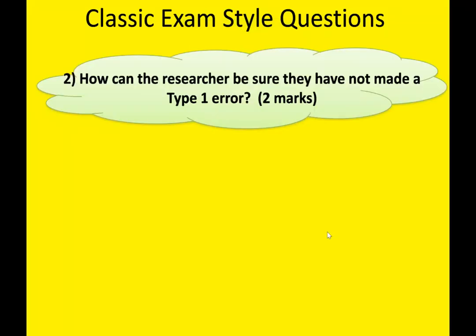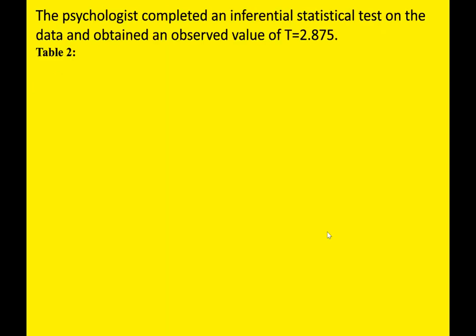Welcome back — this is Type 1 and Type 2 Errors Part 2. Another classic exam-style question is: 'How can the researcher be sure they have not made a Type 1 error?' (two marks). If you get this question, you will have had a different question immediately before it, so I'm going to go through that preceding question first, and then we'll look at this one. That question will have given you an observed or calculated value of whatever statistical test was used.